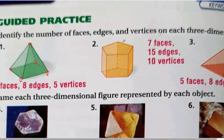How many edges? The base has five sides — one, two, three, four, five. We have five edges on the top base and five on the bottom base. Then the sides: one, two, three, four, five — five more edges. So five plus five plus five is fifteen edges.